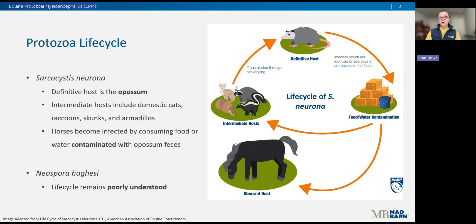That's the life cycle of Sarcocystis neurona. Unfortunately, our understanding of Neospora hugessi is poor — we really don't know how N. hugessi is transmitted or where it hides out in the wild, or what species serve as the definitive host. Other Neospora species that are closely related reside inside canids — dogs, coyotes, things like that — but it's unknown if N. hugessi specifically follows the same pattern.